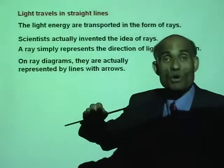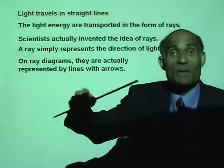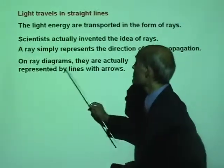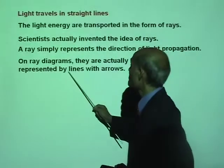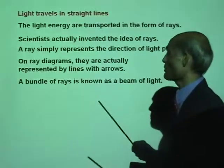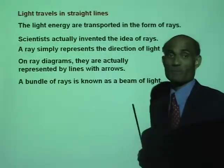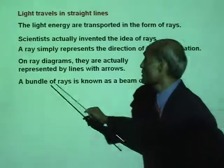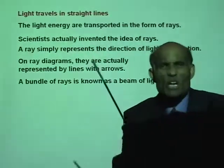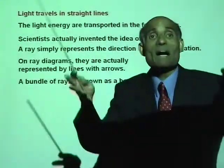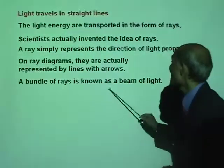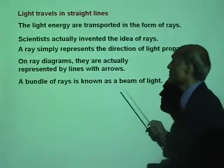When you want to draw diagrams using rays, they are represented by lines with arrows. And when you have a bundle of rays — a bunch of rays — we call it a beam of light.